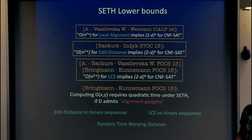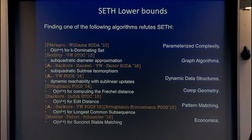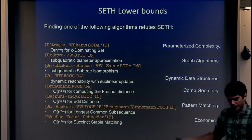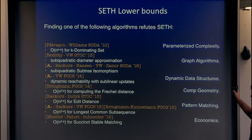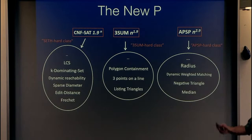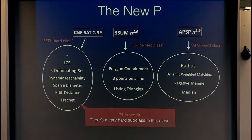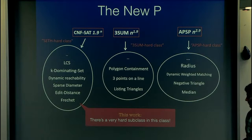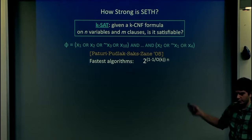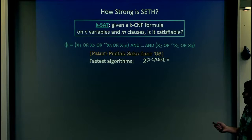These results are part of a long line of work on strong ETH lower bounds, covering many problems across computer science. This is part of the bigger picture of conditional lower bounds in P that this workshop is about. What our work does is look at this class and find a subclass of it that is much harder than the rest.